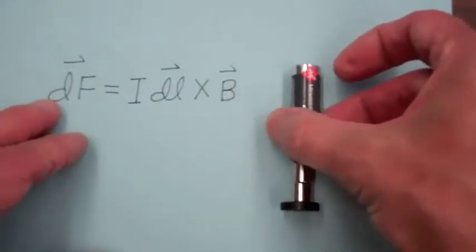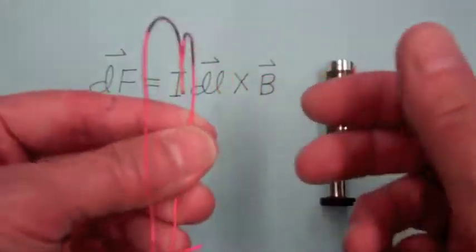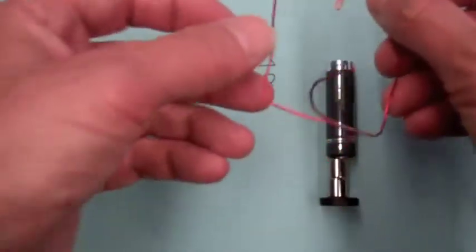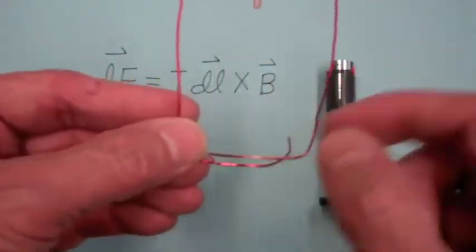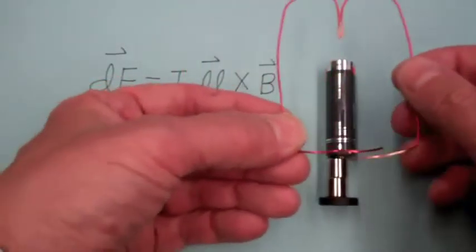Okay, now I'm going to take this wire that I've bent, and I'm going to put this pointed end here on the negative terminal of the battery, and then the bottom part, two parts, on the opposite sides of this magnet.